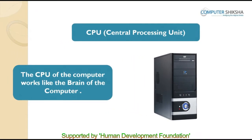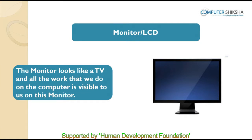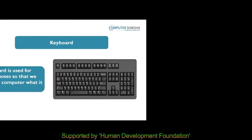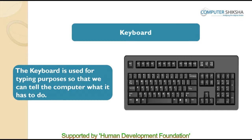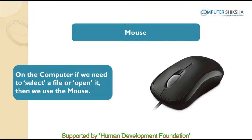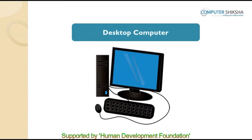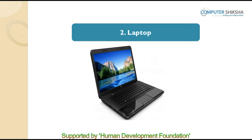The CPU of the computer works like the brain of the computer. The monitor looks like a TV and all the work that we do on the computer is visible to us on this monitor. The keyboard is used for typing so that we can tell the computer what it has to do. If we need to select a file or open it, we use the mouse. To keep a desktop computer, we need more space, and since it has four parts, it becomes difficult to take it from one place to another.